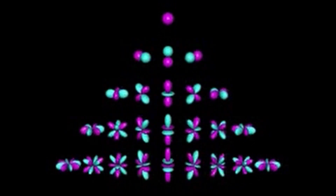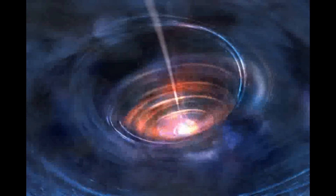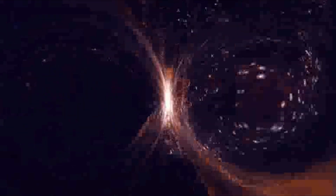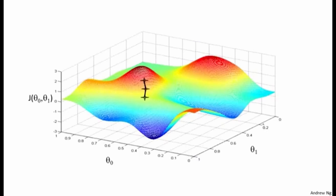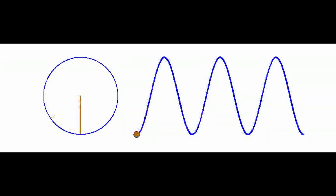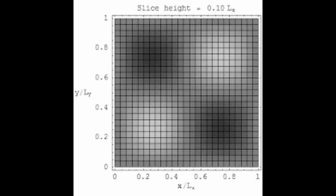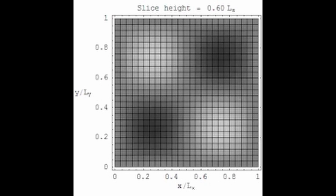Another fundamental question in biology is how life evolved from simple to complex forms over time. Some scientists have argued that entropy also played a key role in this process, as it provided the driving force for variation, innovation, and adaptation in living systems. According to this view, life is a result of a natural tendency of matter and energy to explore different configurations and possibilities, which are more diverse and novel. This process is also known as emergence, and it can be seen as a way of increasing the overall entropy of the universe.